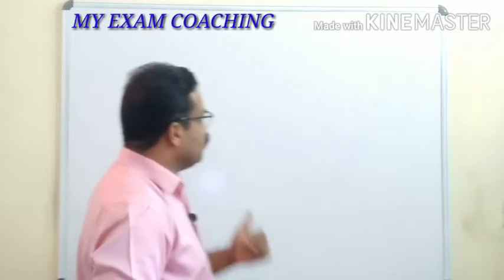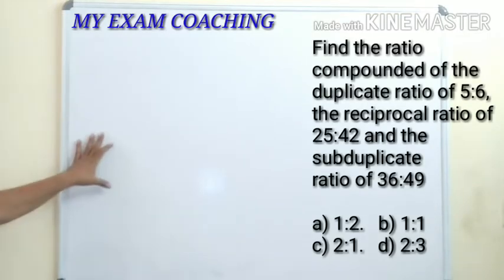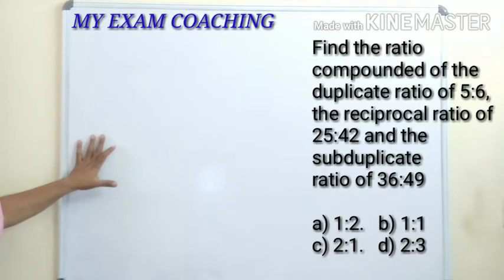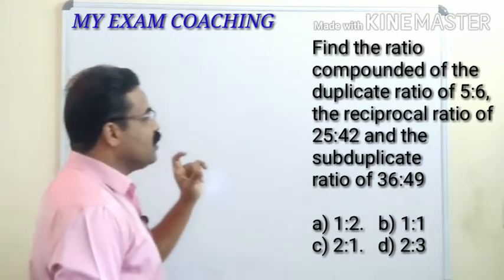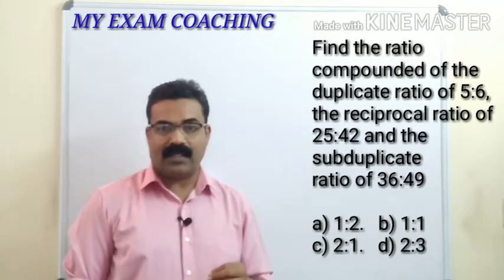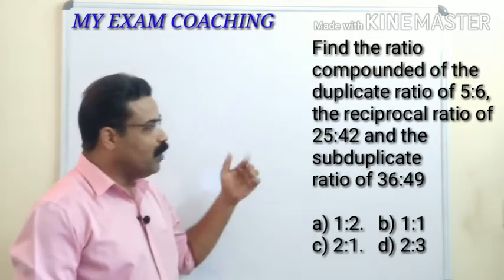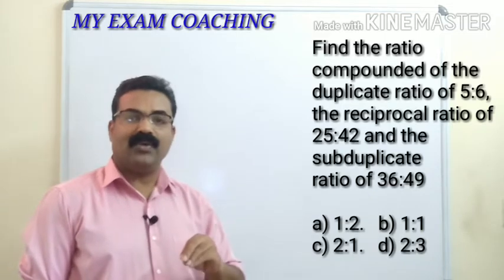Here is your first question: find the ratio compounded of the duplicate ratio of 5 is to 6, the reciprocal ratio of 25 is to 42, and the sub-duplicate ratio of 36 is to 49. To solve this, we should understand what is a duplicate ratio, sub-duplicate ratio, and reciprocal ratio. Let me take a minute to explain these concepts.